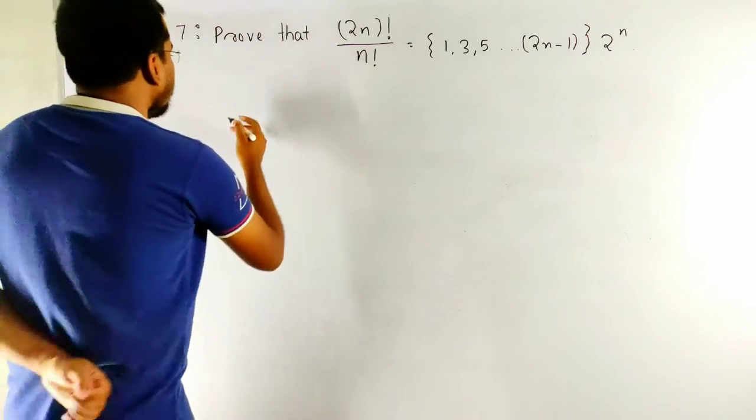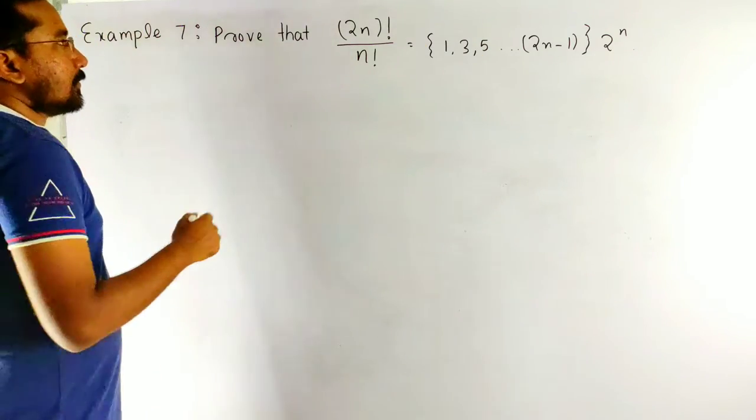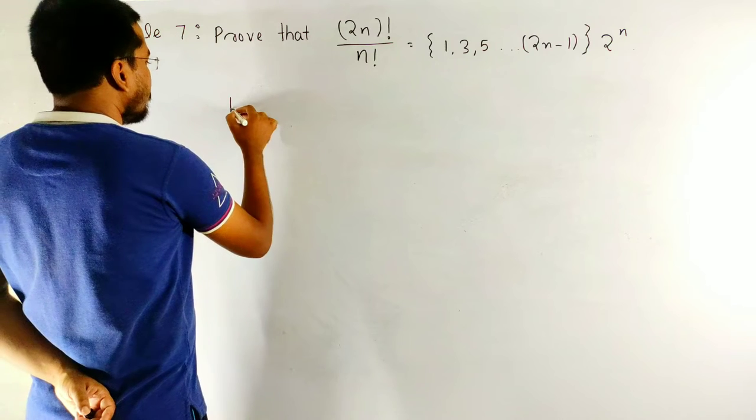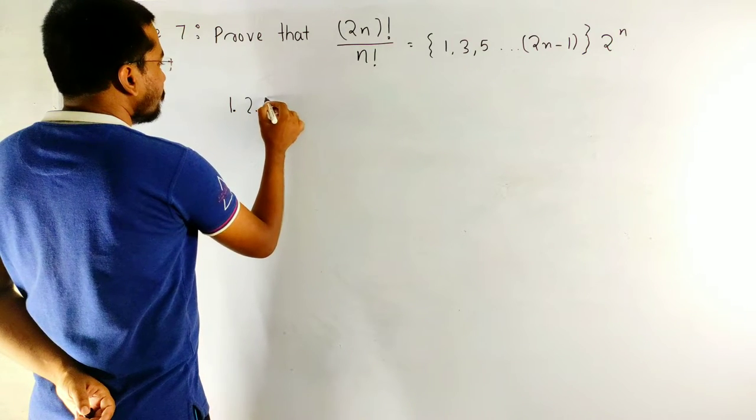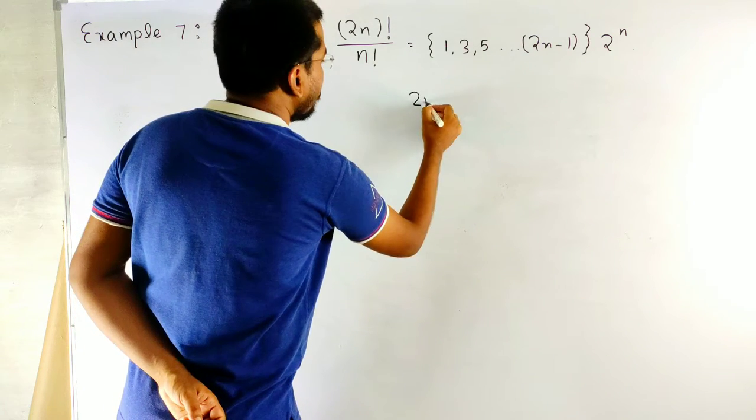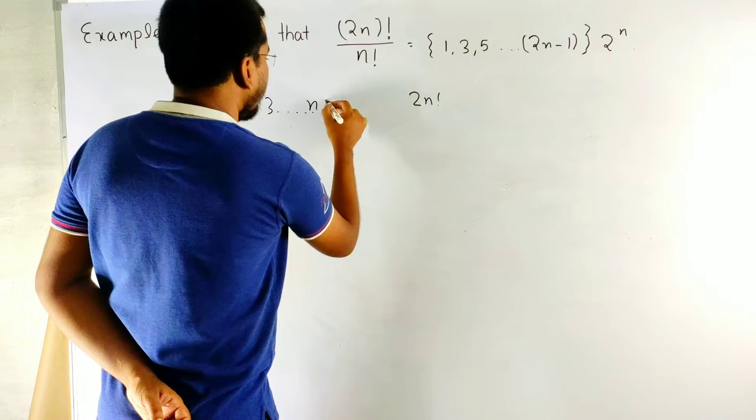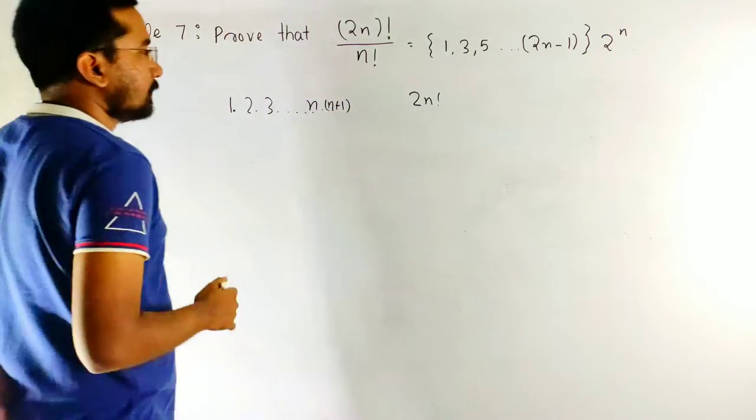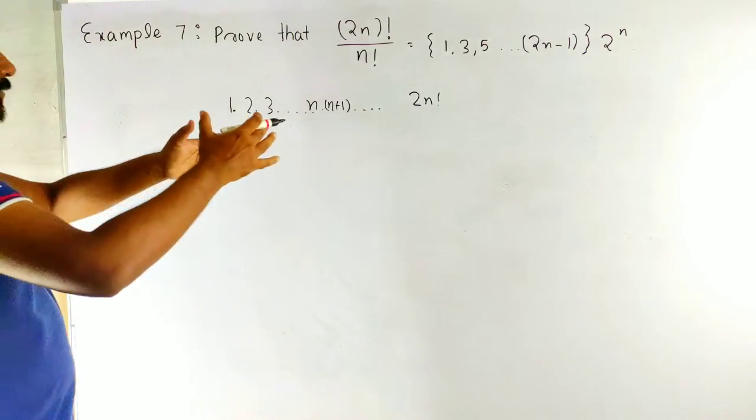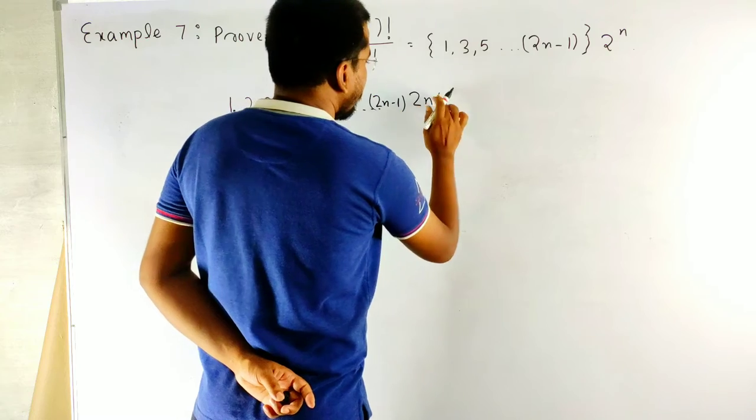2n factorial, we have to convert to this factorial. What is 2n factorial? 1 multiplied 2, 3 up to n, 2n up to 2n. And in between, n will come and again n plus 1 and up to 2n factorial. And in just before 2n, there will be 2n minus 1. No factorial sign here.